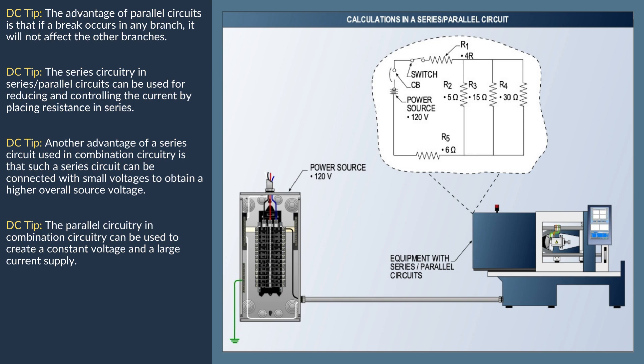I3 (third amperage) equals ETP (total voltage) divided by R3 (third resistance). ETP equals 29.9 volts divided by 15 ohms, which equals 1.99 amps.